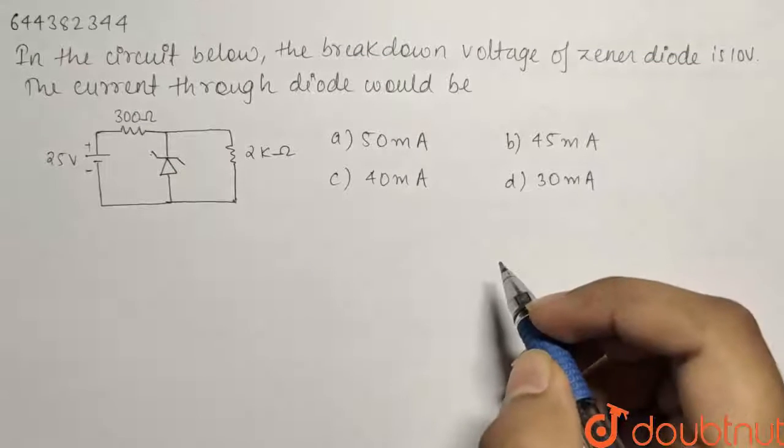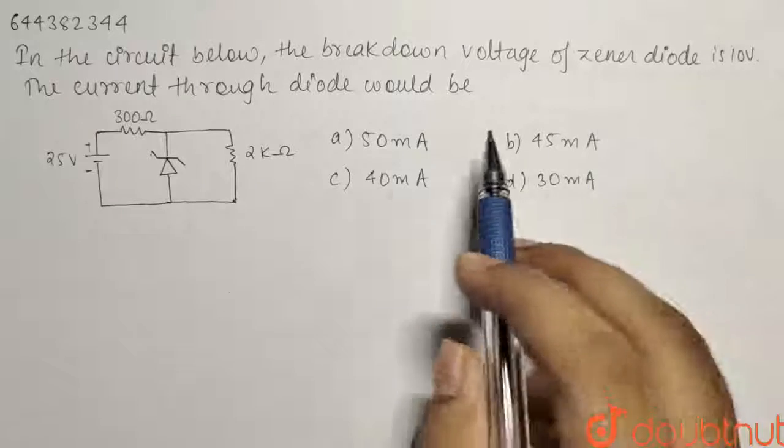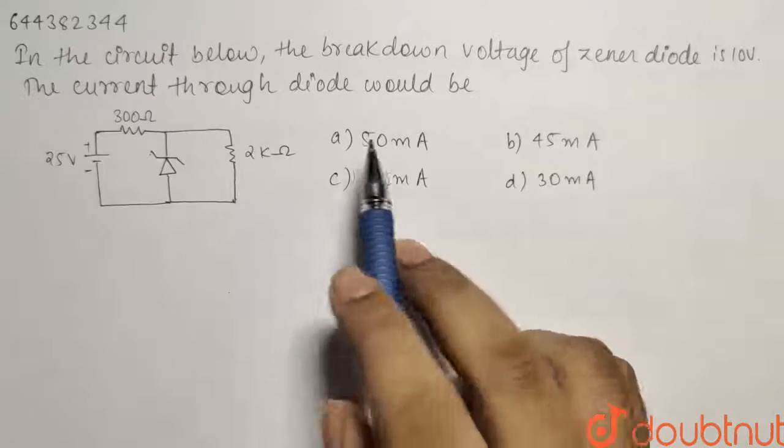So here we have a question from the chapter modern physics. In the circuit below, the breakdown voltage of Zener diode is 10 volts. The current through the diode would be?